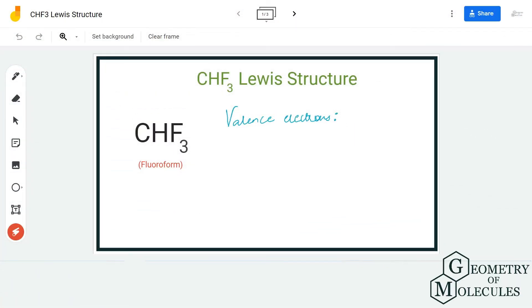Hi guys, welcome back to our channel. In today's video we are going to help you determine the Lewis structure of CHF3. It is the chemical formula for fluoroform, and to know its Lewis structure we are first going to look at the total number of valence electrons for this molecule.